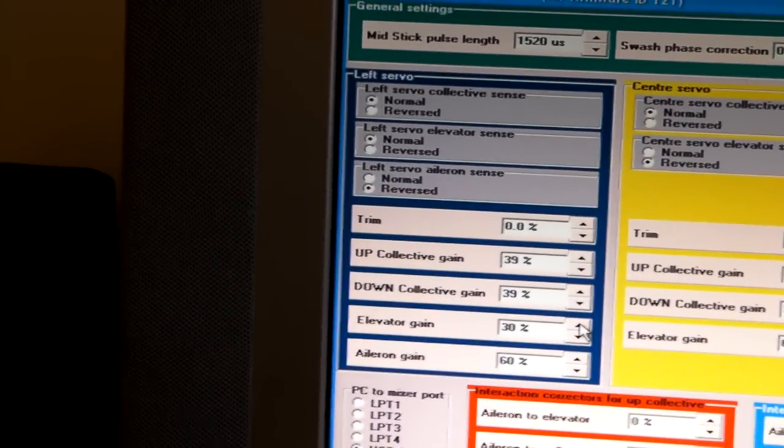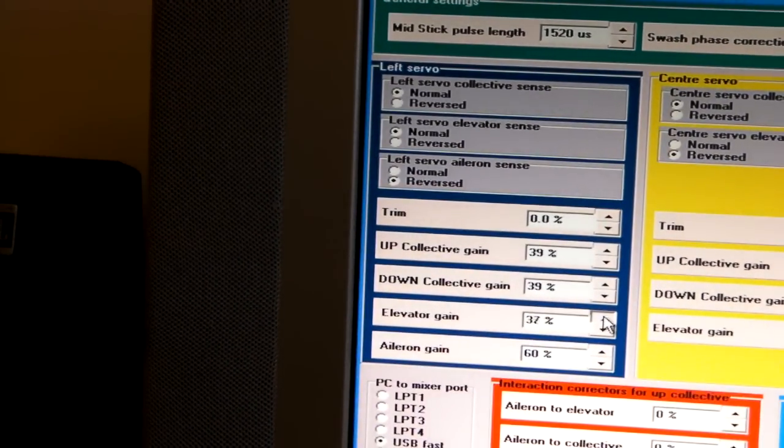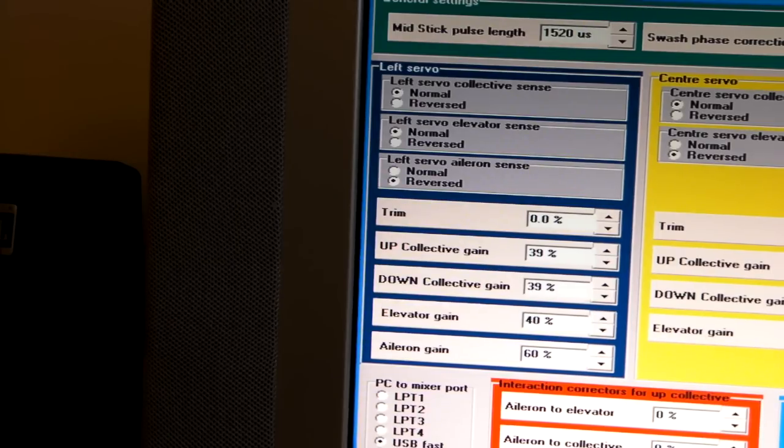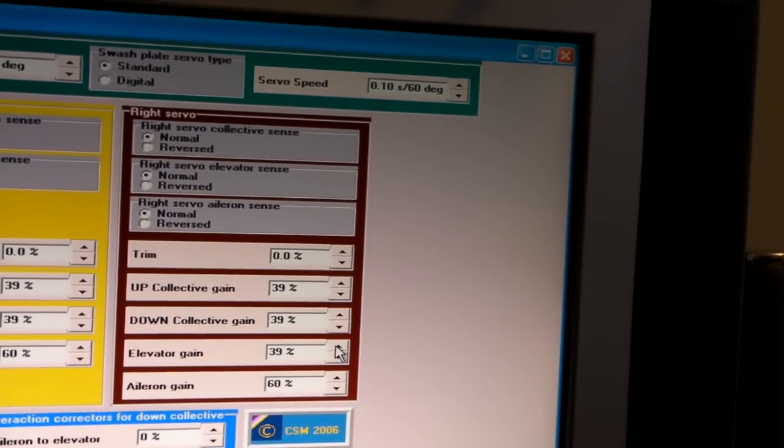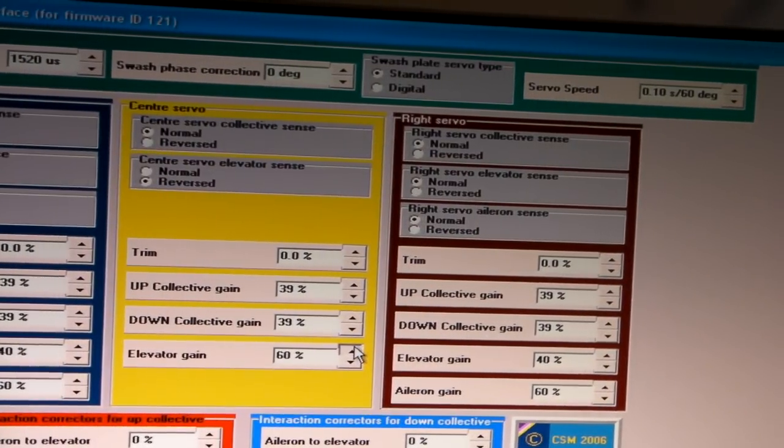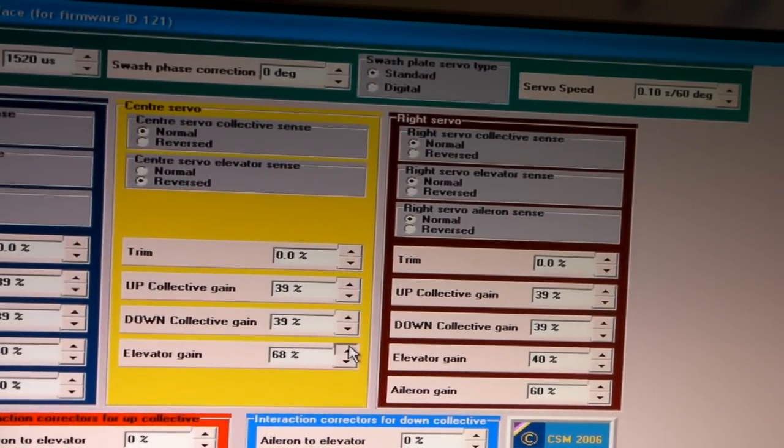Now we want more elevator on the back, so we're going to crank that one up to 40%. We're going to crank up the right servo to 40% and also crank up the front elevator to 70%.